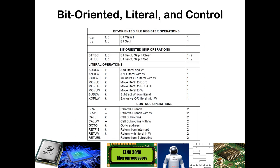Looking further at the rest of this table: bit clearing and bit setting are also one-cycle commands. Our bit tests, as mentioned, are one and sometimes two cycles if there is a skip. Our literal operations — adding, inclusive OR-ing, moving, and those kinds of things — are one-cycle commands. Down at the control operations, they are mostly two-cycle commands. These include things like calling subroutines, returning from subroutines, returning from interrupts, and go-tos. Anytime we have these types of commands, they take two instruction cycles.